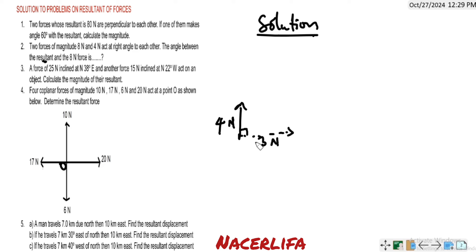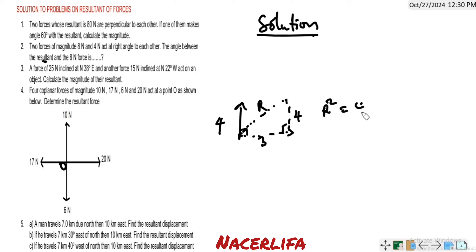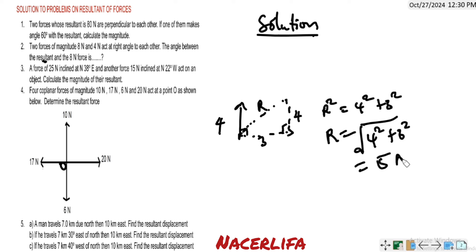The angle between these two resultants is 90 degrees. Using Pythagoras: R² = 4² + 3². So R = √(4² + 3²) = 5 Newton. The resultant force for these four coplanar forces is 5 Newton.